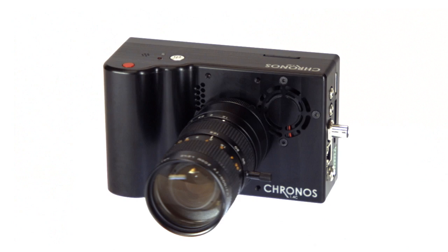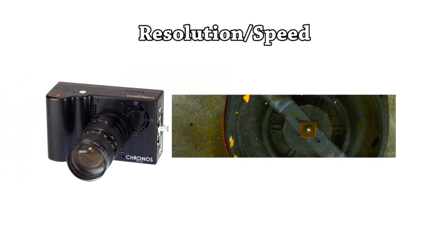Kronos 1.4 is a 1.4 gigapixel per second throughput high-speed camera capable of resolutions up to 1280 by 1024. Image size is adjustable in 16 by 2 pixel increments, allowing increased speed at lower resolutions.